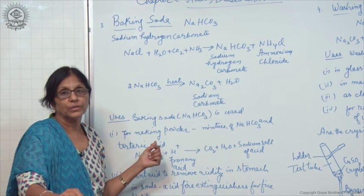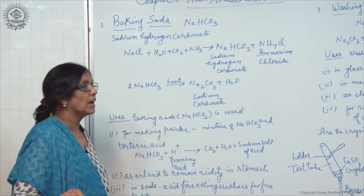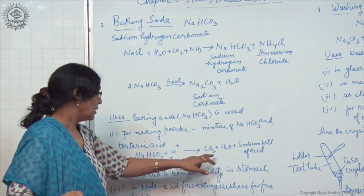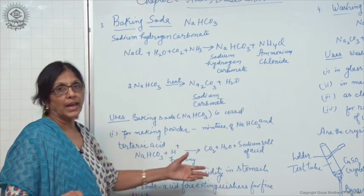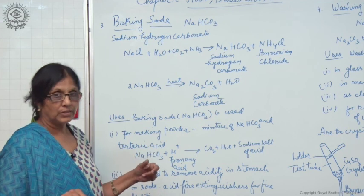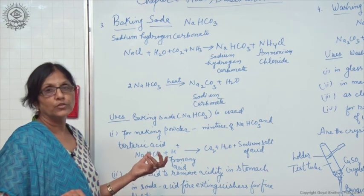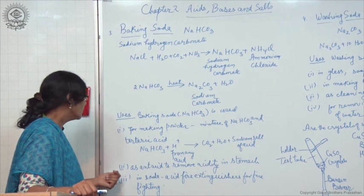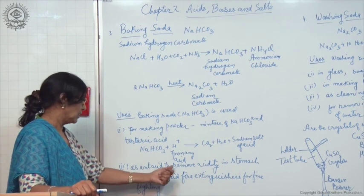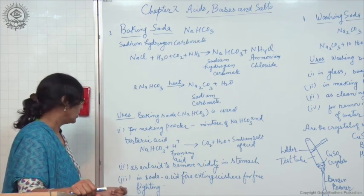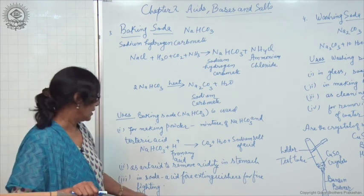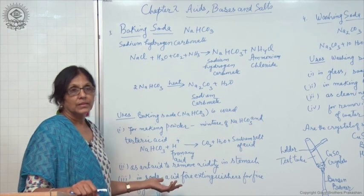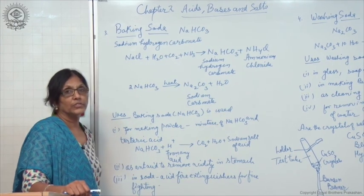Baking soda is a mixture of sodium hydrogen carbonate and tartaric acid. When baking soda is mixed with water, it liberates carbon dioxide gas, which makes the dough rise and makes the bread and cake spongy and soft. It is widely used in baking bread and cake, as antacid to remove acidity in stomach, and for firefighting in soda acid fire extinguishers. It liberates carbon dioxide gas on reacting with acid, which extinguishes the fire.